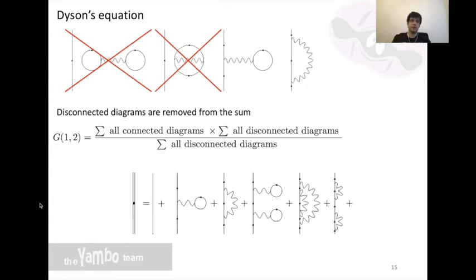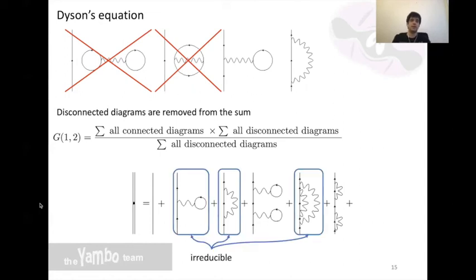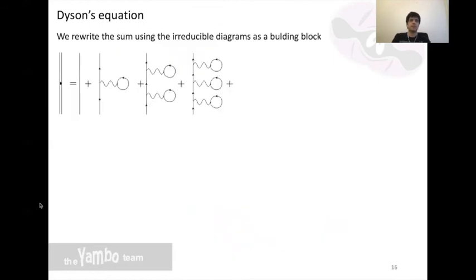Furthermore, we can also distinguish between reducible diagrams and irreducible diagrams. Irreducible diagrams are those where we cannot cut the Green's function line and still keep a valid diagram, while reducible diagrams you can cut through a G line and re-obtain a valid diagram in your expansion. If you rewrite your sum using only the irreducible diagrams as a building block, you obtain something like this. Here I'm only using this kind of diagram for simplicity, and now the double line represents the full interacting Green's function.